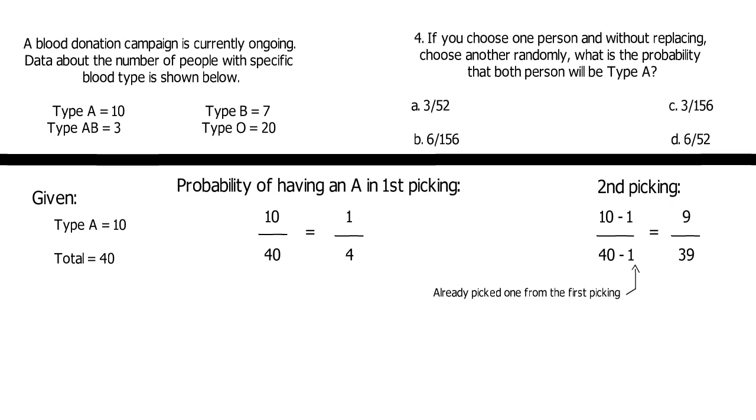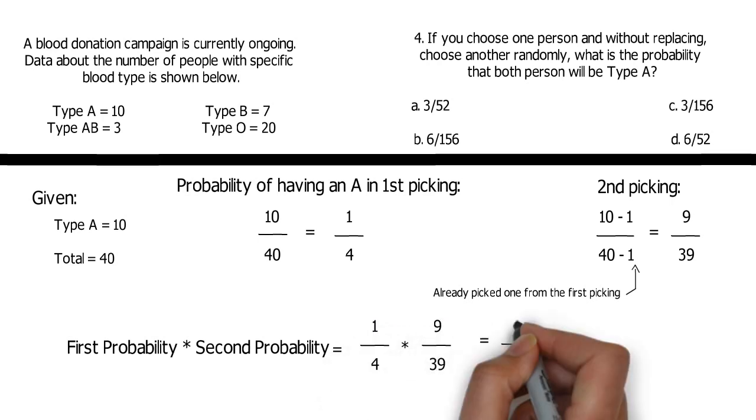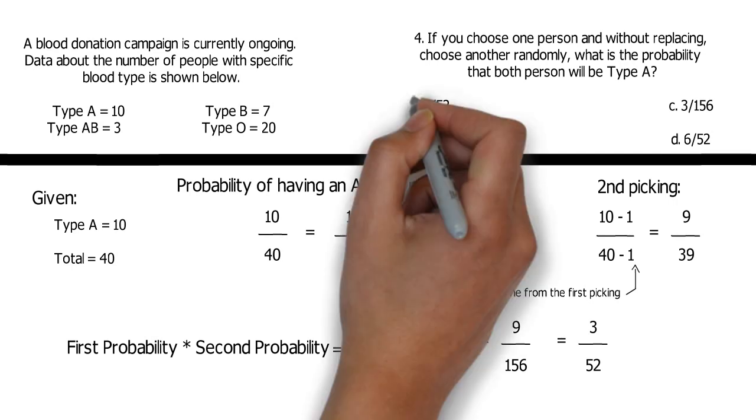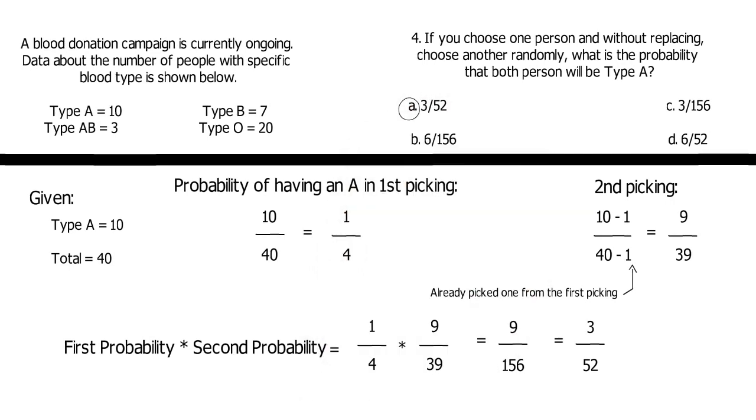Just ignore those grammar warriors. To get the probability of getting both type A, just multiply the two initial probabilities. 1 fourth times 9 over 39 is equal to 9 over 156. Reduce it to lowest term, 3 over 52. So, we have the probability of 3 over 52 to get both type A.